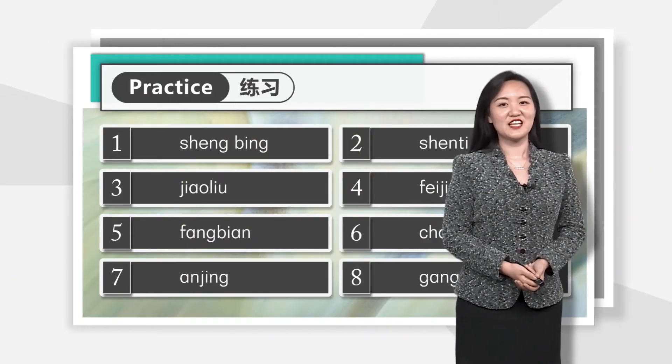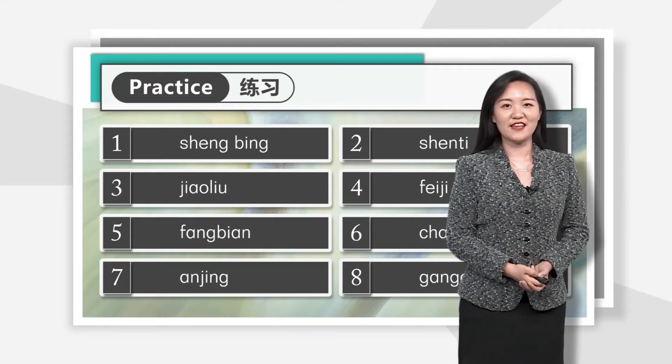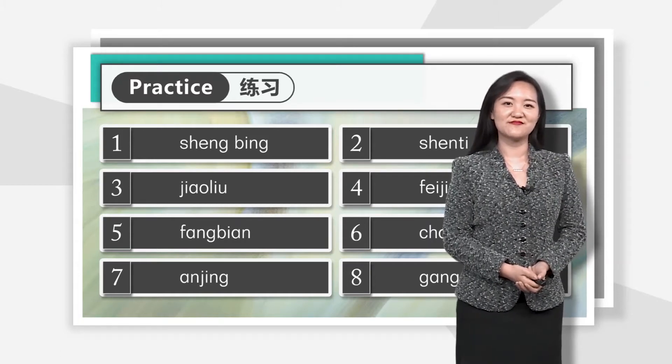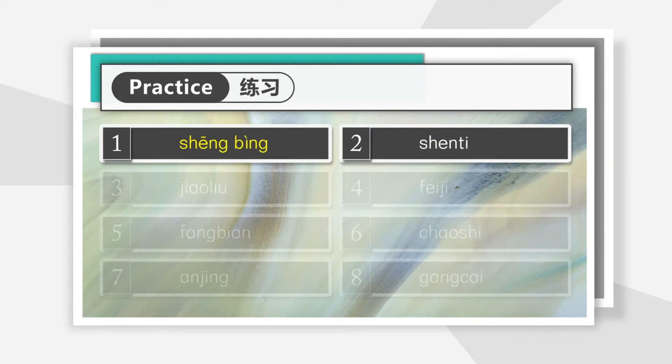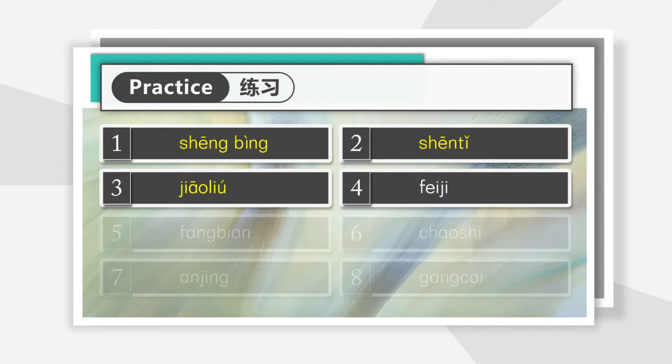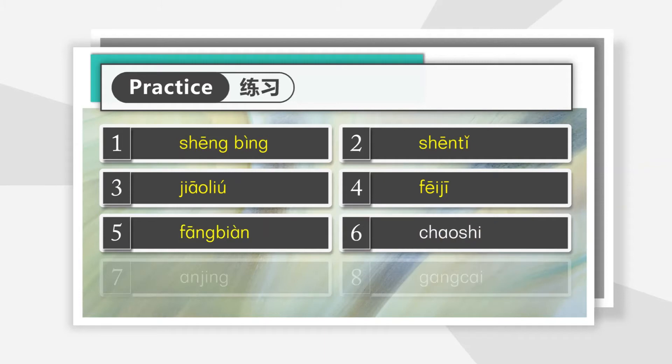Now challenge time. Listen to the audio and add the tone marks for the following words: 一: 生病. 二: 身体. 三: 交流. 四: 飞机. 五: 方便. 六: 超市.